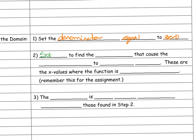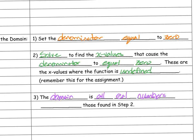Step two: solve to find the x-values that cause the denominator to equal zero. These are the x-values where the function is undefined. Step three: the domain is all real numbers except those x-values found in step two.